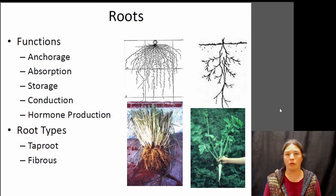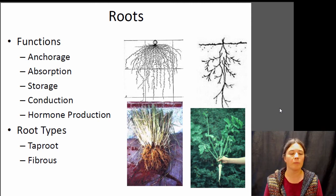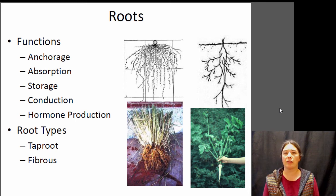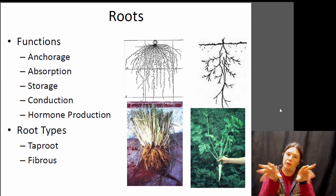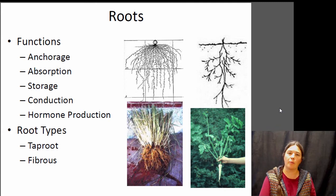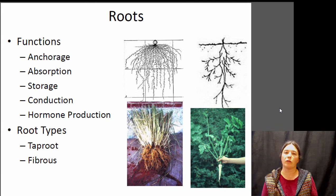Roots also conduct material from place to place and are responsible for a large portion of hormone production — we'll talk about plant hormones in a couple of lectures. There are two major root types: tap roots, which look kind of like a carrot — a long skinny root that goes more or less straight down — and fibrous roots, which branch out. If you've ever pulled up a chunk of grass clinging to all that dirt with many little roots, those are fibrous root systems.